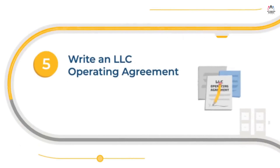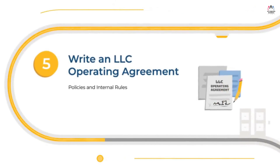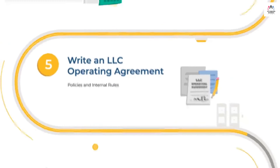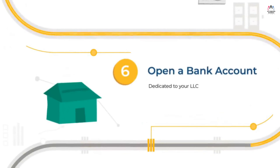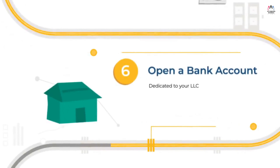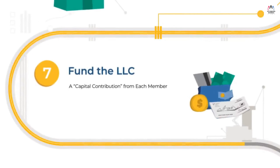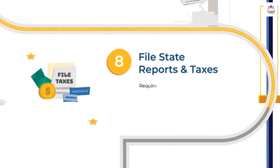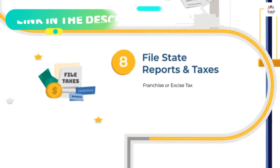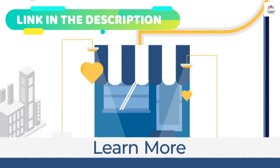Put your LLC policy in writing with an operating agreement — make it easy with a free template. Remember, because the LLC separates you and your business, your LLC needs its own bank account. Your bank account does no good empty, so it's time for each member to contribute. Be prepared for annual filings and fees like state reports and taxes. Check the link in the description below to start your LLC with Northwest Registered Agent.